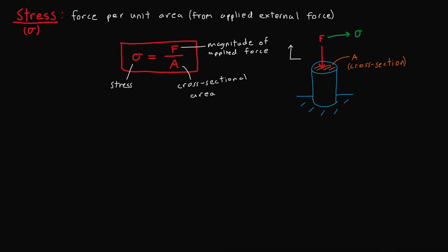Now if we define our coordinates as x and y, just like so, then this normal stress will be represented as sigma yy. But of course, since the force is in the downward direction, the negative y direction, this will actually be negative sigma yy. So this represents a compressive stress.